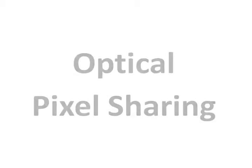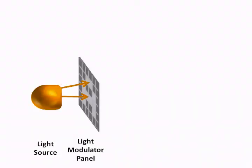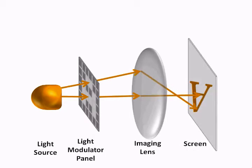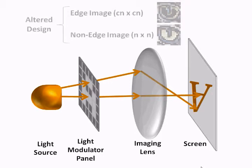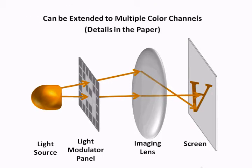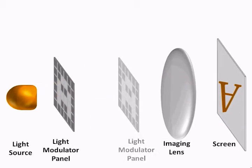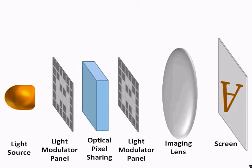To create the high resolution edge image, we introduce the concept of optical pixel sharing. In a standard digital projector, a light source illuminates a light modulator panel. The modulated light then passes through an imaging lens and is focused onto the screen. We alter the standard digital projector design to create the edge and non-edge images for a grayscale image. Our method can easily be extended to multiple color channels. In front of the projector lamp, we place two cascaded light modulator panels instead of one. Our optical pixel sharing unit is placed in between the panels.